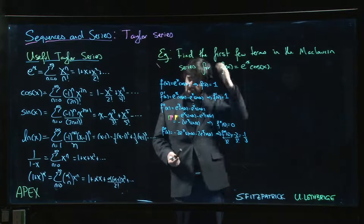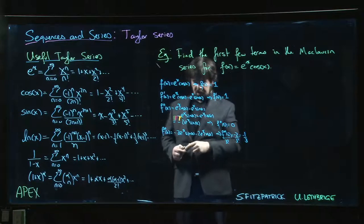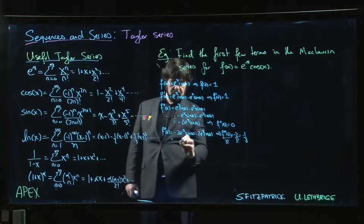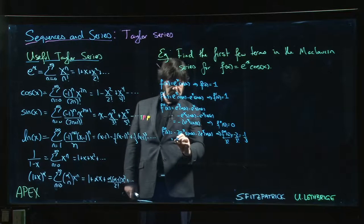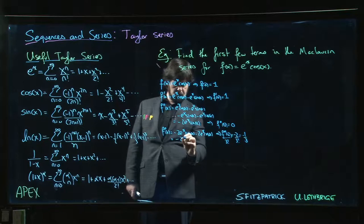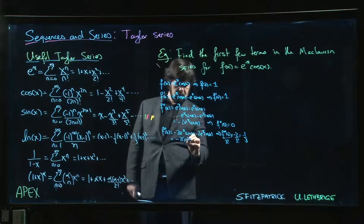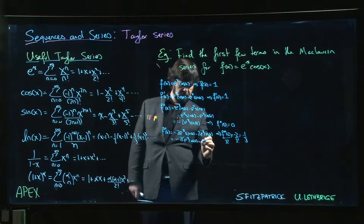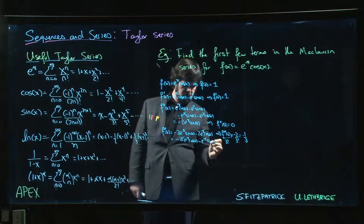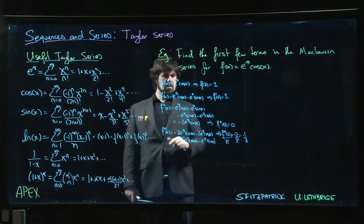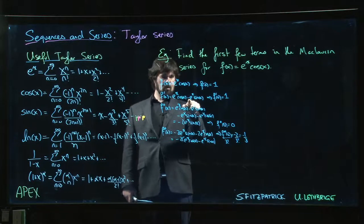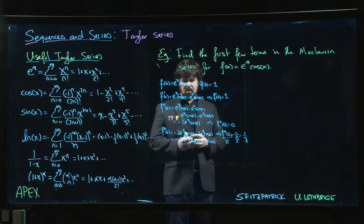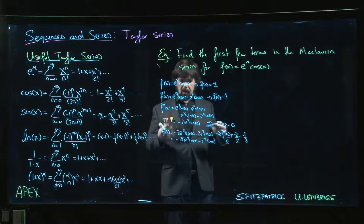But, and maybe it's not so bad because actually, you can, you do actually get a pattern this time. You get, this is going to be, pull out the minus 2, and you have e to the x cos x minus e to the x sin x, which is, oh, which is what we had here, right?